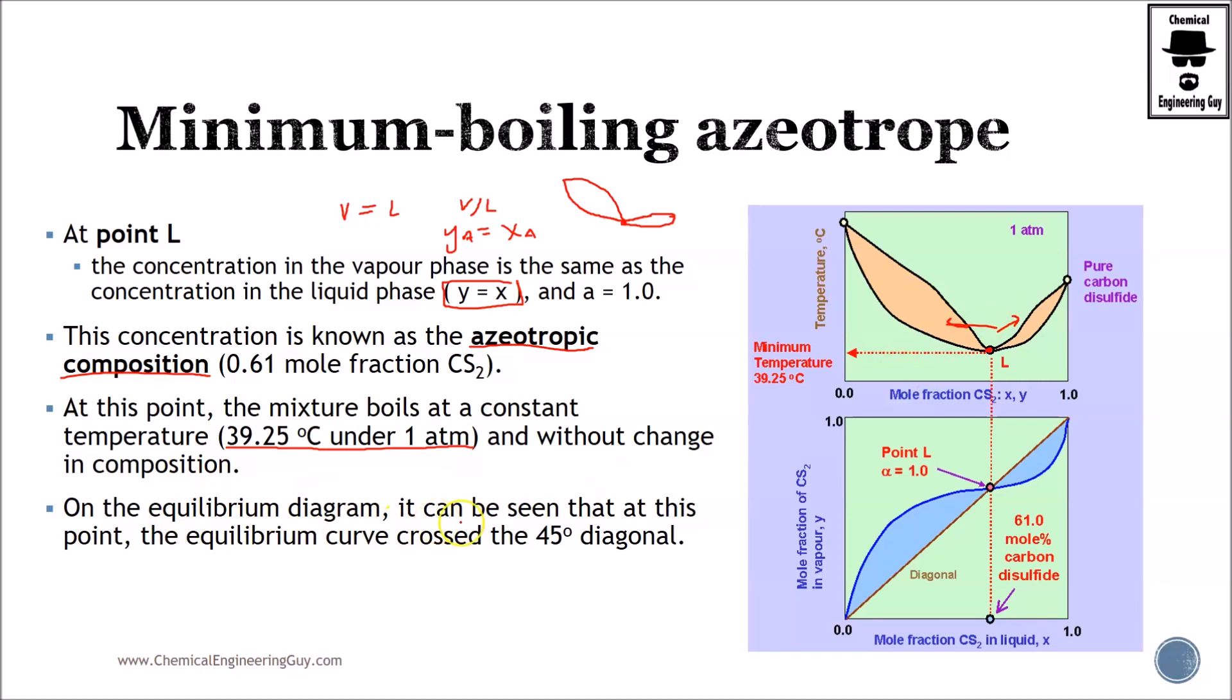On the equilibrium diagram, it can be seen that at this point, we have the line with the 45 degrees. So this is temperature versus composition, but let's go to composition versus liquid composition and vapor composition. Remember that if we have a crossing in the xy diagram or the 45 degree line, then we will not be able to carry out our distillation. Now we know that this is the azeotropic point.